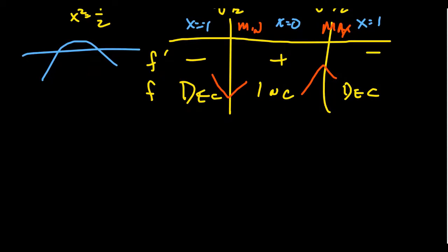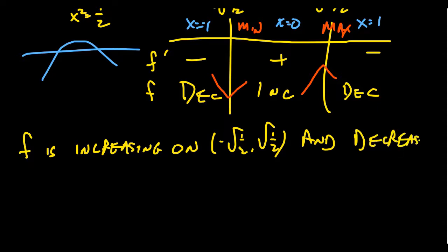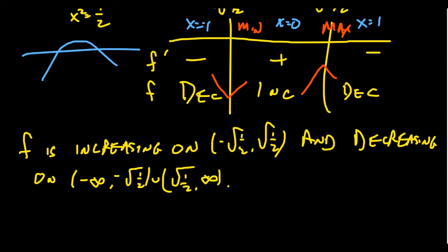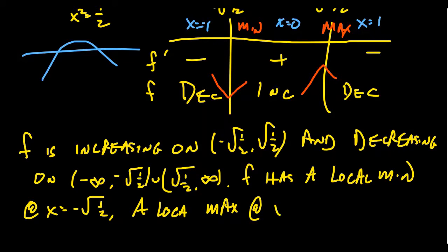To summarize example 3: f is increasing on the interval (-√(1/2), +√(1/2)), and f is decreasing on (-∞, -√(1/2)) ∪ (√(1/2), ∞). f has a local minimum at x = -√(1/2) and a local maximum at x = √(1/2). We've demonstrated in this video how to find the local extrema of a function using the first derivative test.